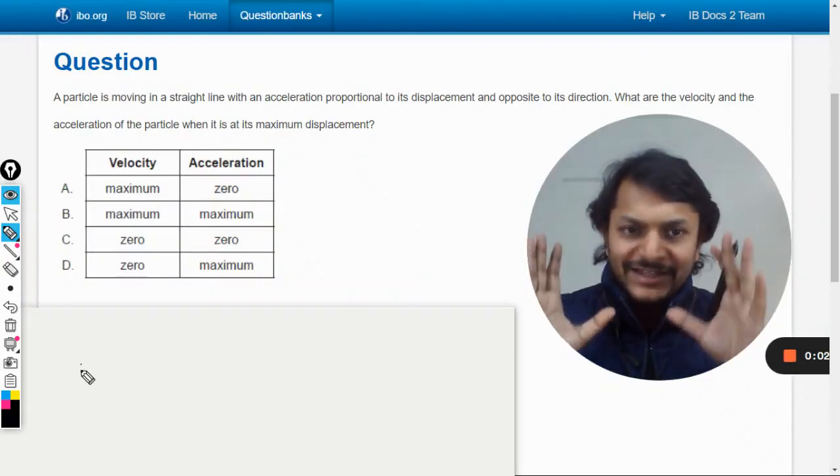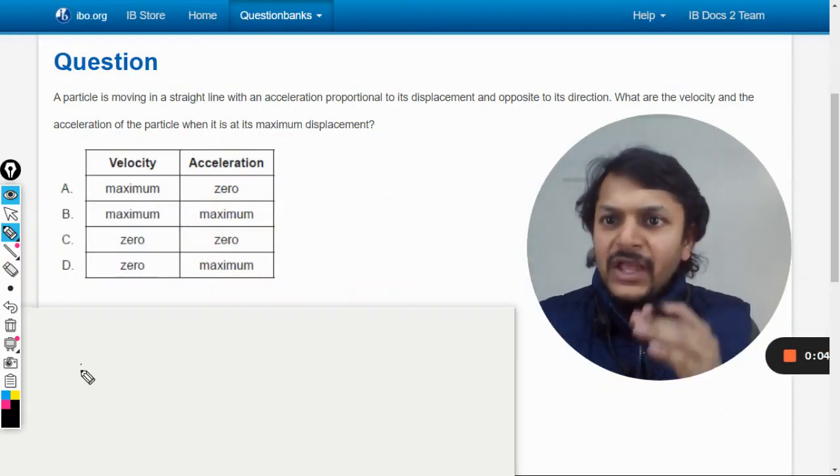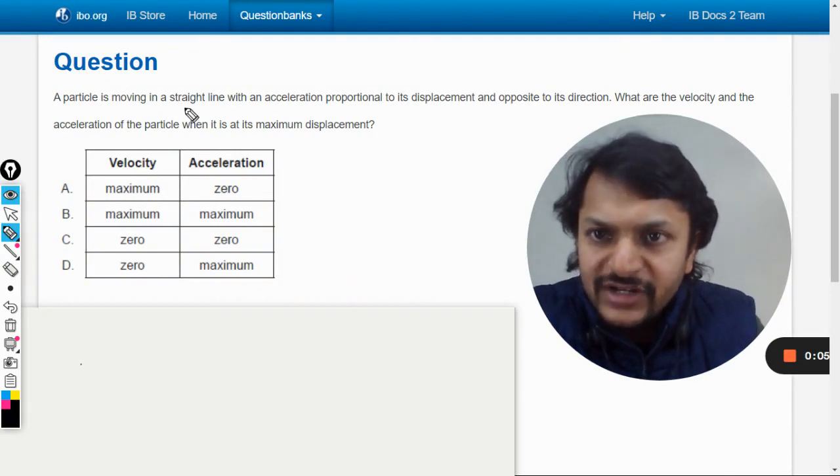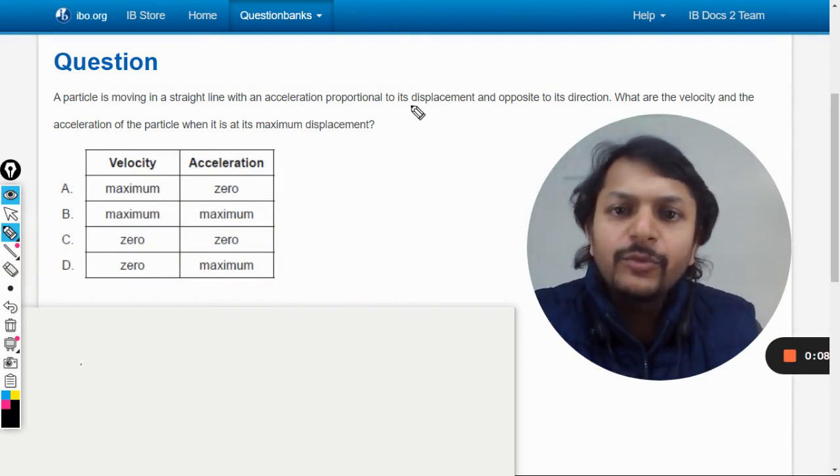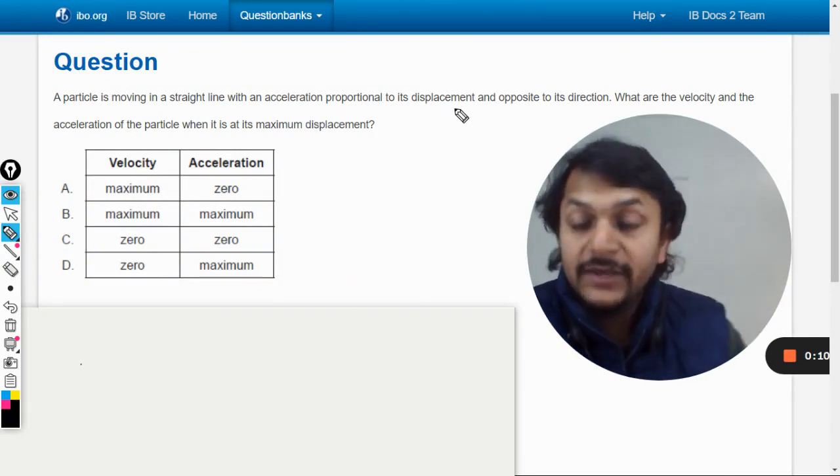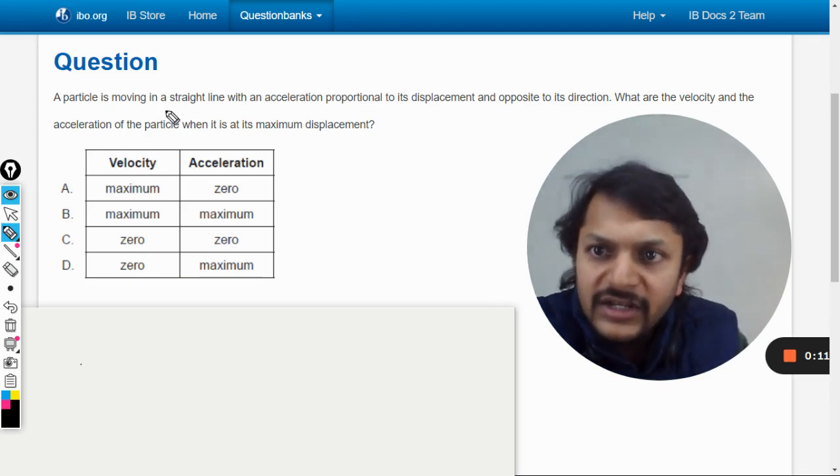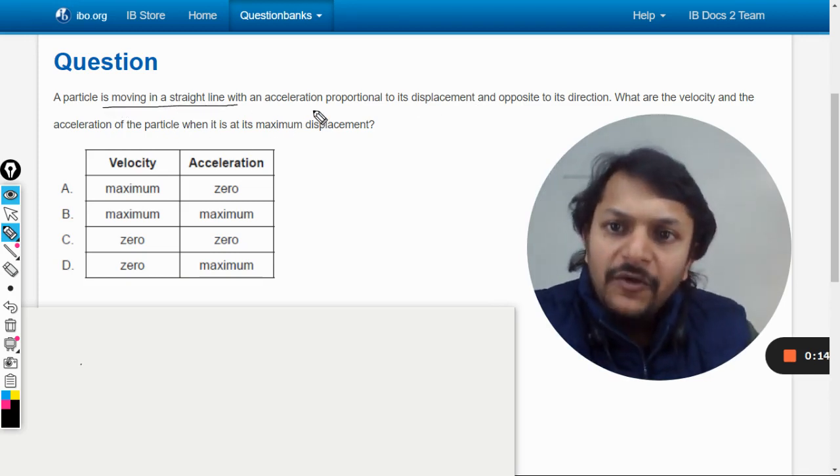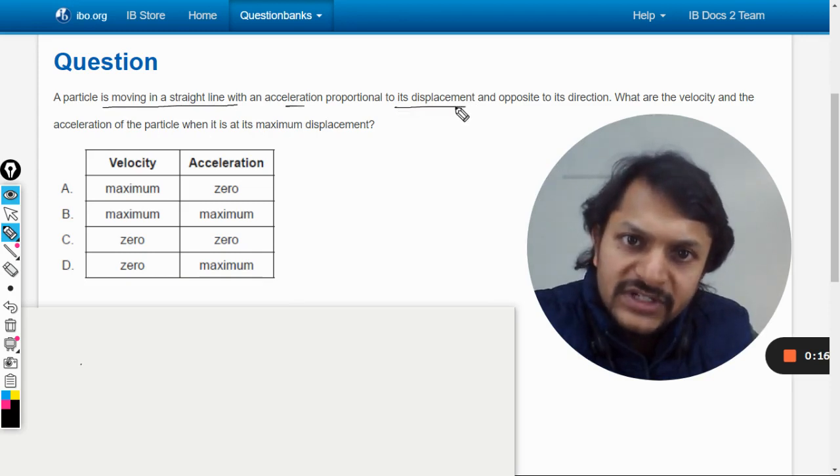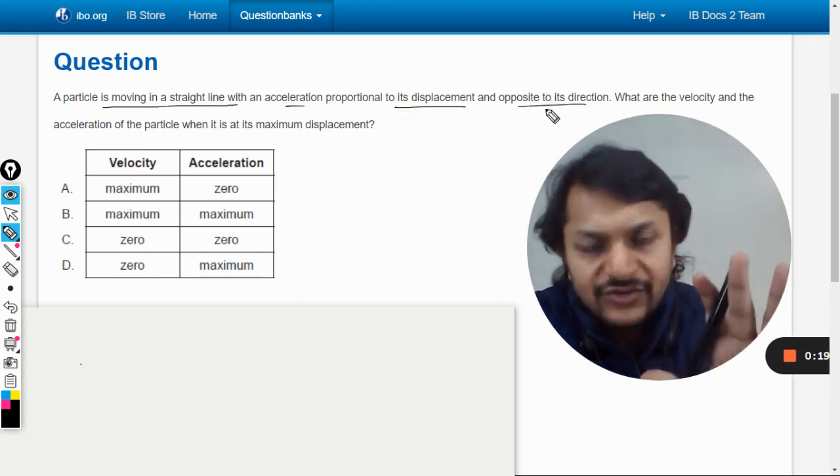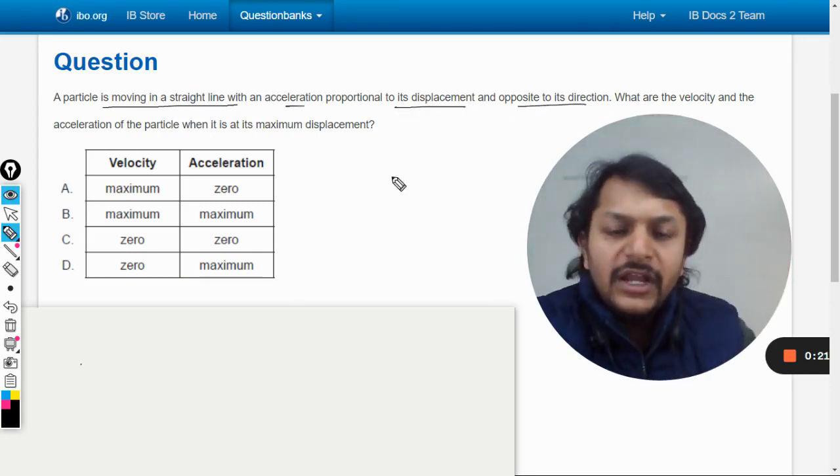Okay dear students, let's see what's in this question. A particle is moving in a straight line with an acceleration proportional to its displacement and opposite to its direction. Let me read it again - the particle is moving in a straight line with acceleration proportional to displacement, opposite to its direction. What does this mean?